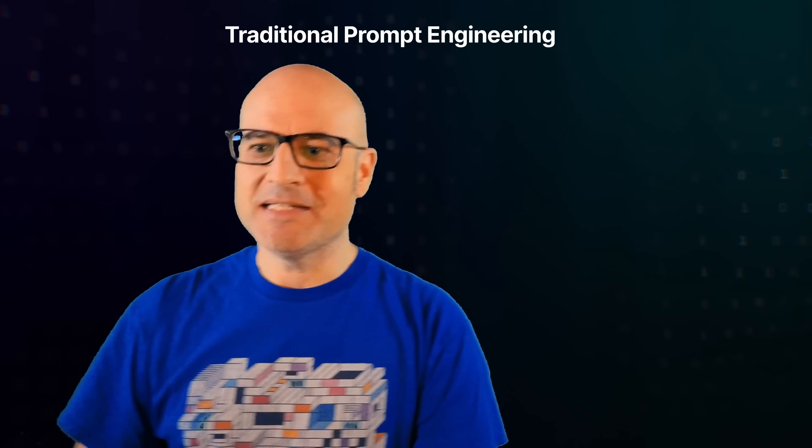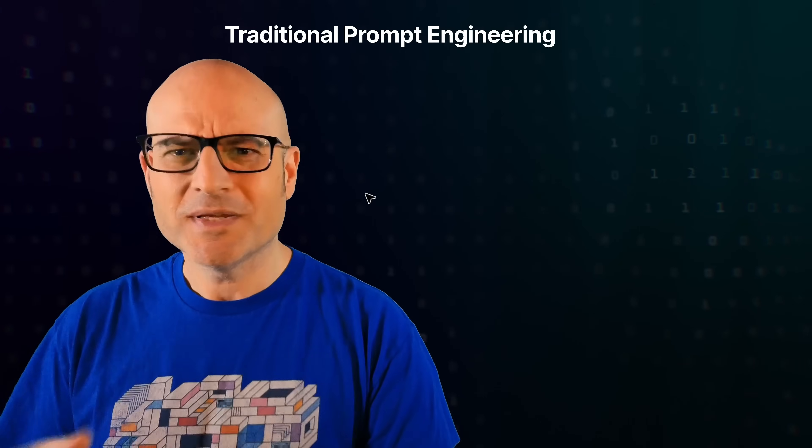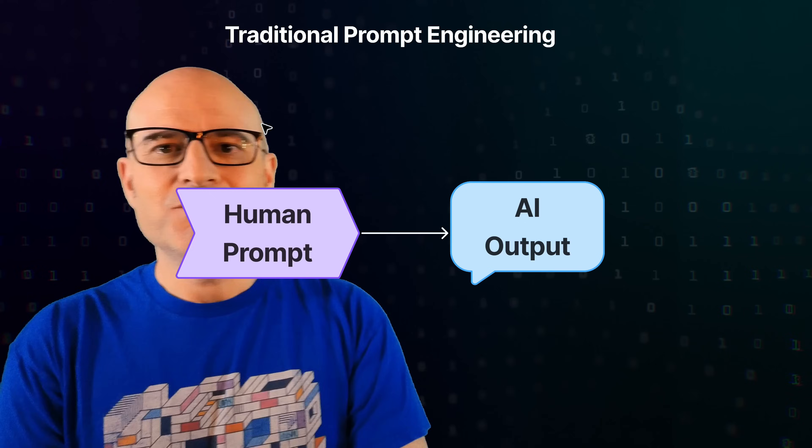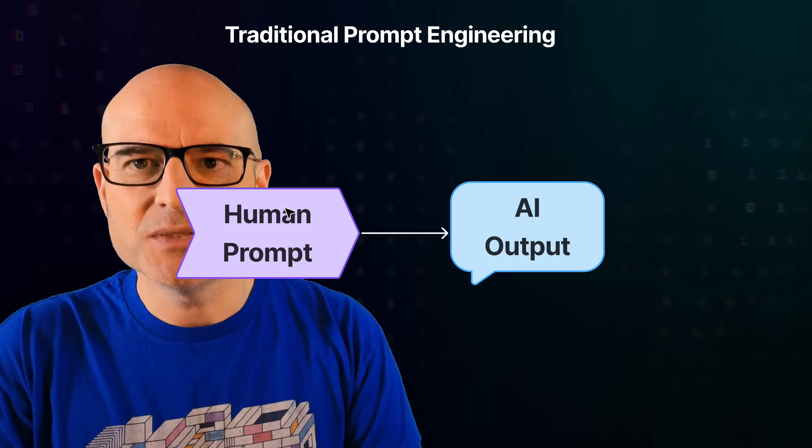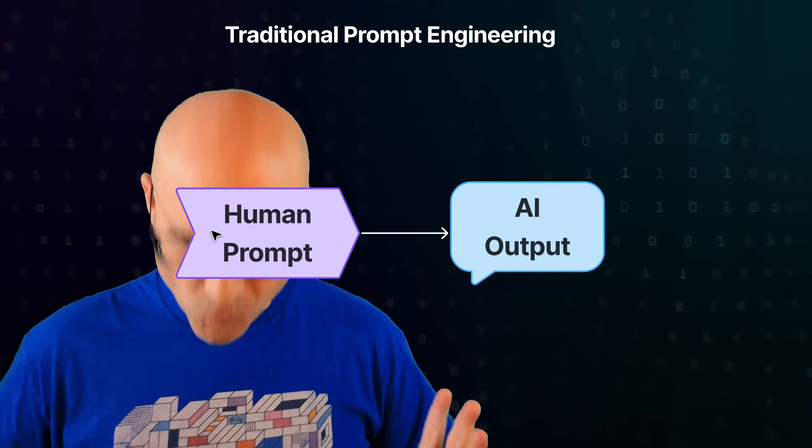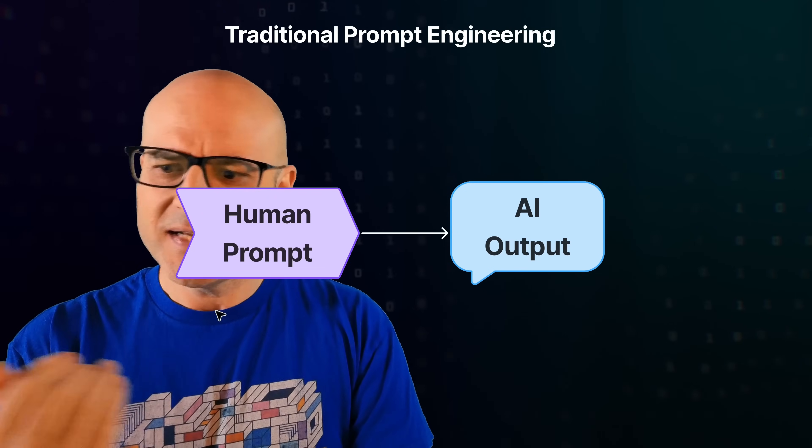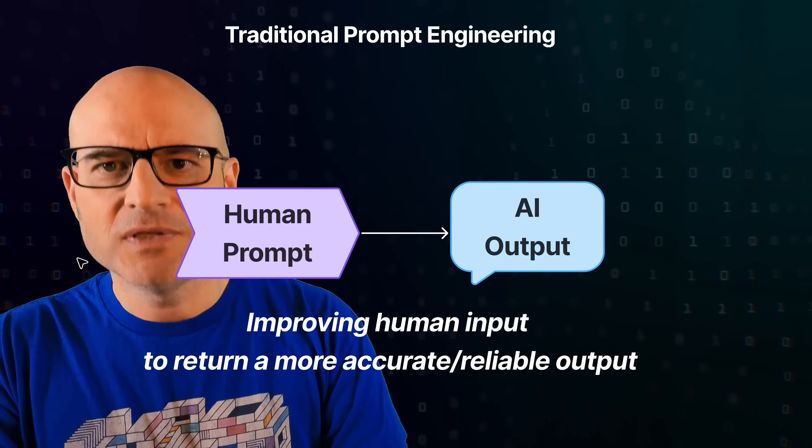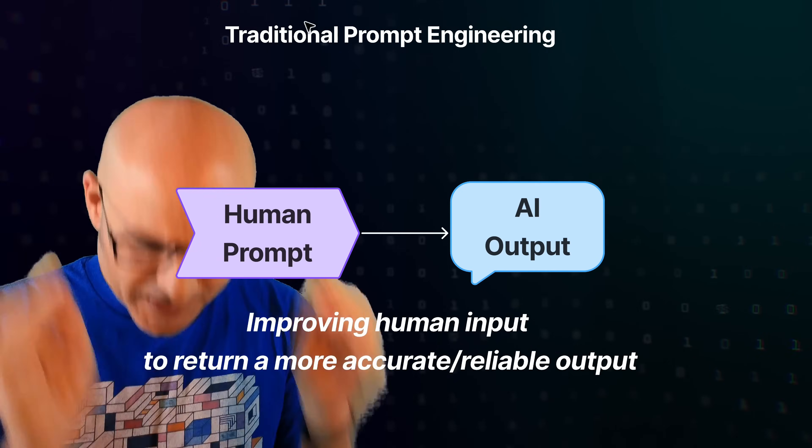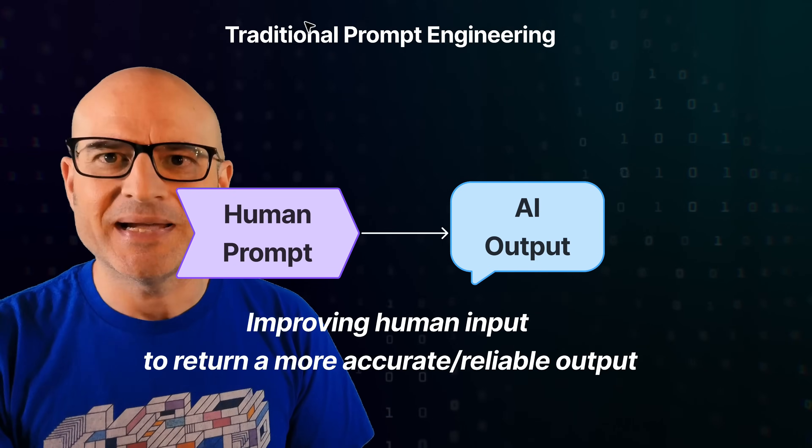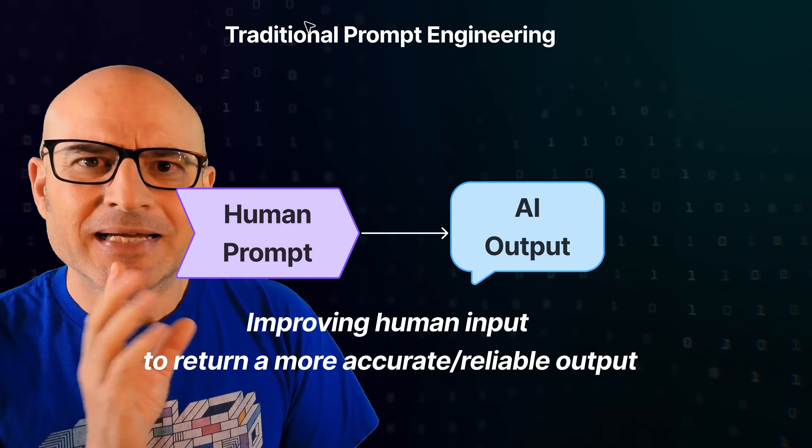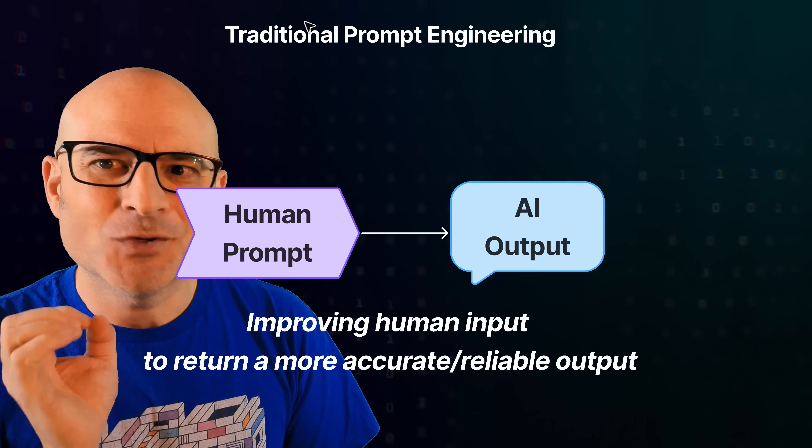Based upon that understanding, traditional prompt engineering, what people do when they're trying to work with LLMs, is they go, I need to create a better output from the LLM. So what I need to do is really work on the human prompt. I need to improve what I'm saying to the LLM, so that it returns a more accurate or reliable output, a more true output. So I'm going to focus all my efforts on what I initially type, so that I get the right answer back. But if we think back to how LLMs work and this coherence and true thing, how likely is that to always succeed?